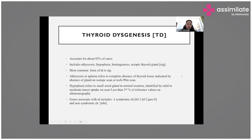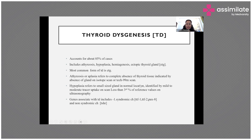The most common cause seen in dysgenesis is the ectopic thyroid gland. Athyreosis refers to complete aplasia or absence of the thyroid gland, which can be identified on ultrasound scan or radioiodine or technetium-99 thyroid nuclear scan. Hypoplasia refers to a small-sized gland with very mild to moderate radiotracer uptake and less than 3% of reference values on ultrasound.